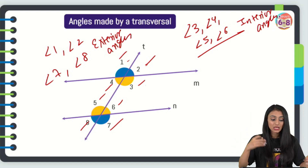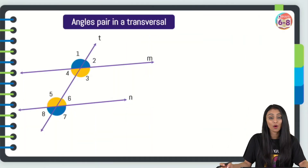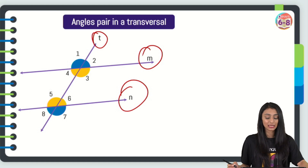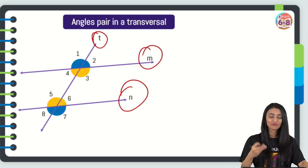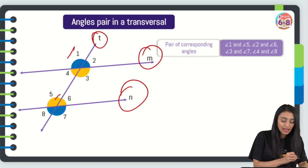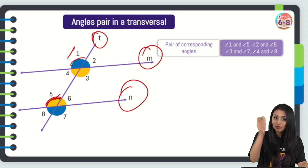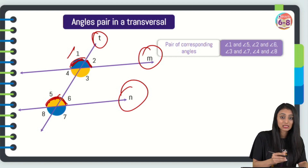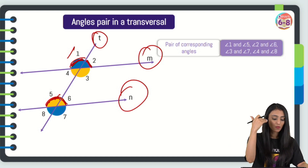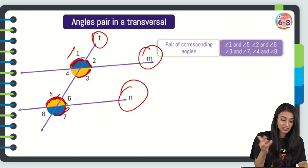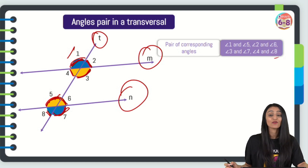Let's see angle pairs formed when two parallel lines M and N are intersected by a transversal T. First, corresponding angles: angle 1 and angle 5 are a pair of corresponding angles — they are on the same side of the transversal, one outside and one inside. Similarly, angle 2 and angle 6, angle 3 and angle 7, and angle 4 and angle 8 are all pairs of corresponding angles.